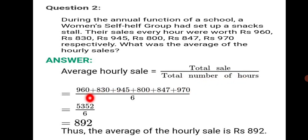Total sale is add up all the numbers: 960 plus 830 plus 945 plus 800 plus 847 plus 970 upon 6. We are adding the sales per hour, every hour how much was the sale, by total number of hours. If we count how many units are given here, how many times hours are given: 1, 2, 3, 4, 5, 6. As many times the worth is given per hour, that many times we take the total, 6 hours. When you total up you get 5352 upon 6. Divide it further and our final answer is 892. Thus the average of the hourly sale, per hour the average sale is 892.